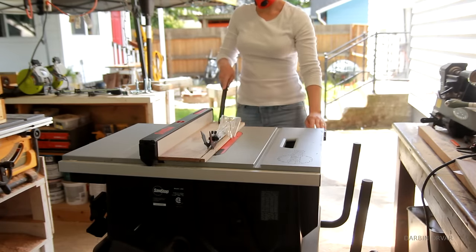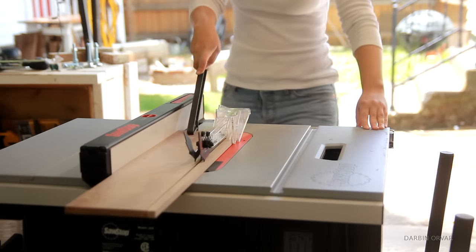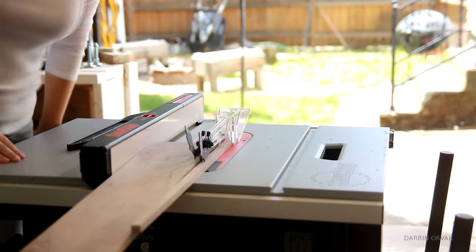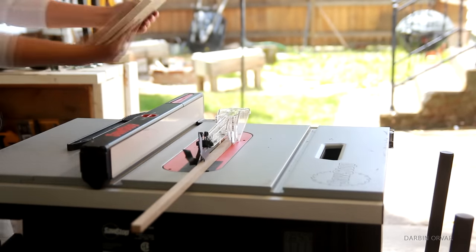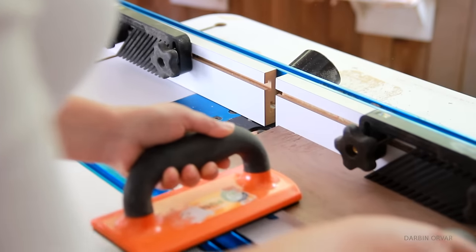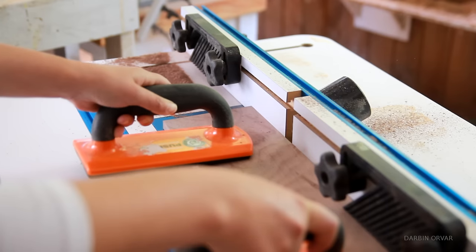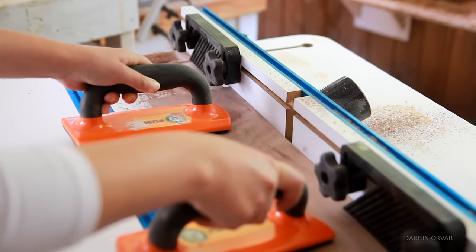Then I ripped it on the new table saw which I have to build a stand for as well. To keep the front and the back cherry pieces in place I decided to go with dados in the walnut.